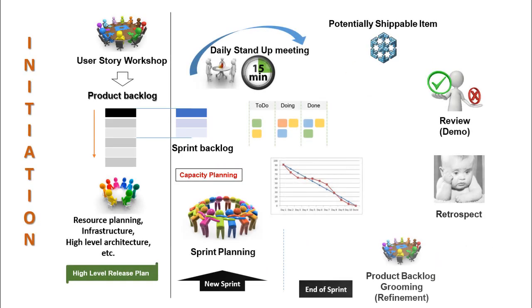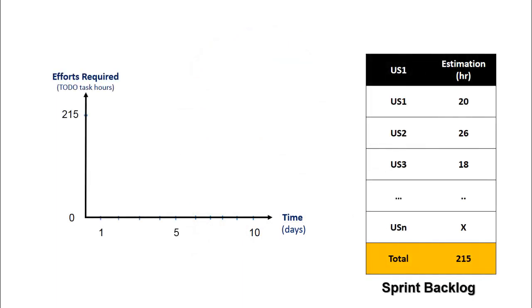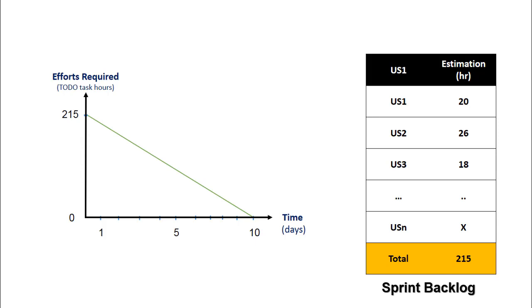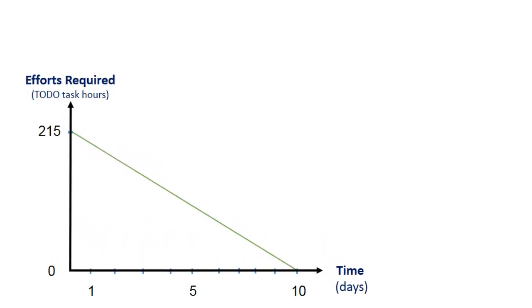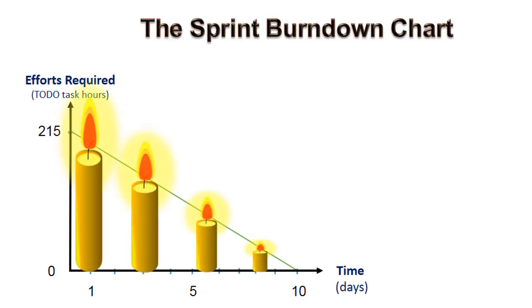Now I am going to discuss about the daily scrum meeting, the Kanban board and the sprint burndown chart. Let us draw a graph based on the sprint backlog efforts required versus available time in the sprint in terms of number of days. At the beginning of the development the required effort hours for the completion of sprint backlog are 215. If everything goes fine then the remaining work hours will be zero on the last day of the sprint. So let us draw a line joining these two points. Theoretically the remaining work hours for every day will fall on this line. This looks like a candle of remaining work burning down, hence it is called a burndown chart, and this straight line is called the ideal sprint burndown chart.